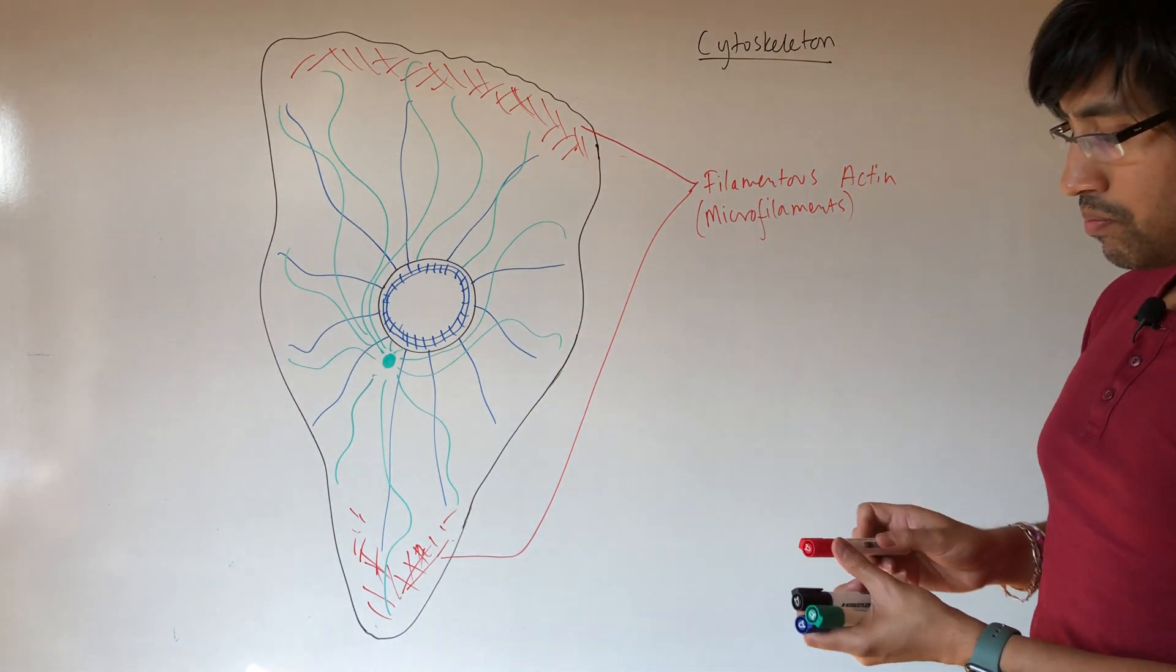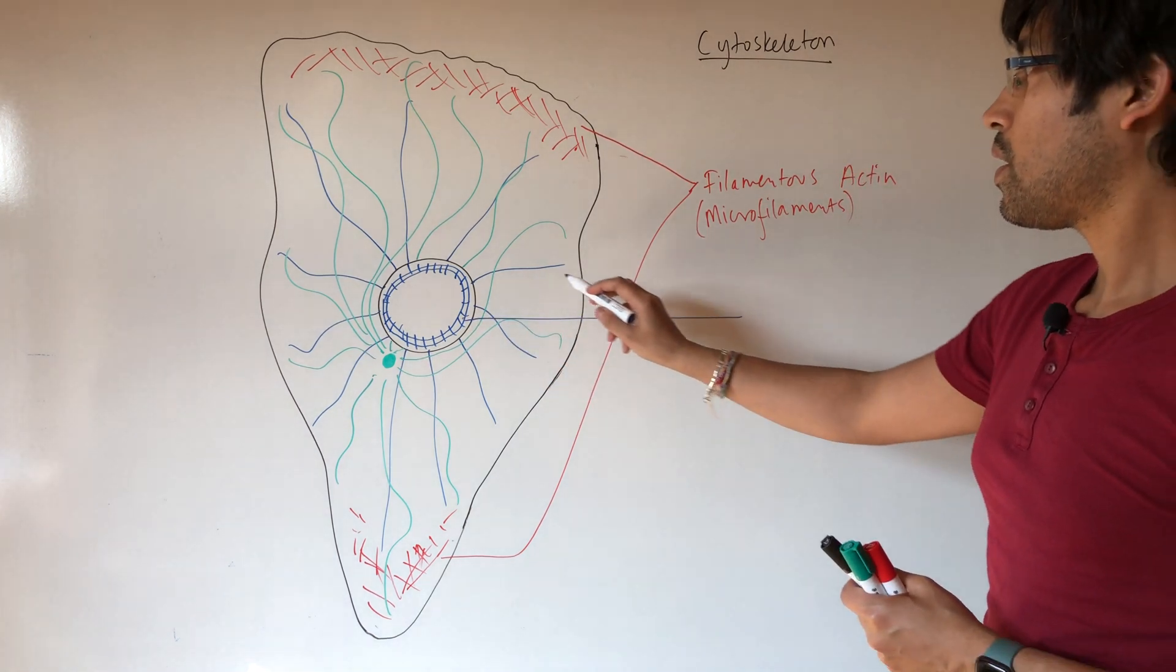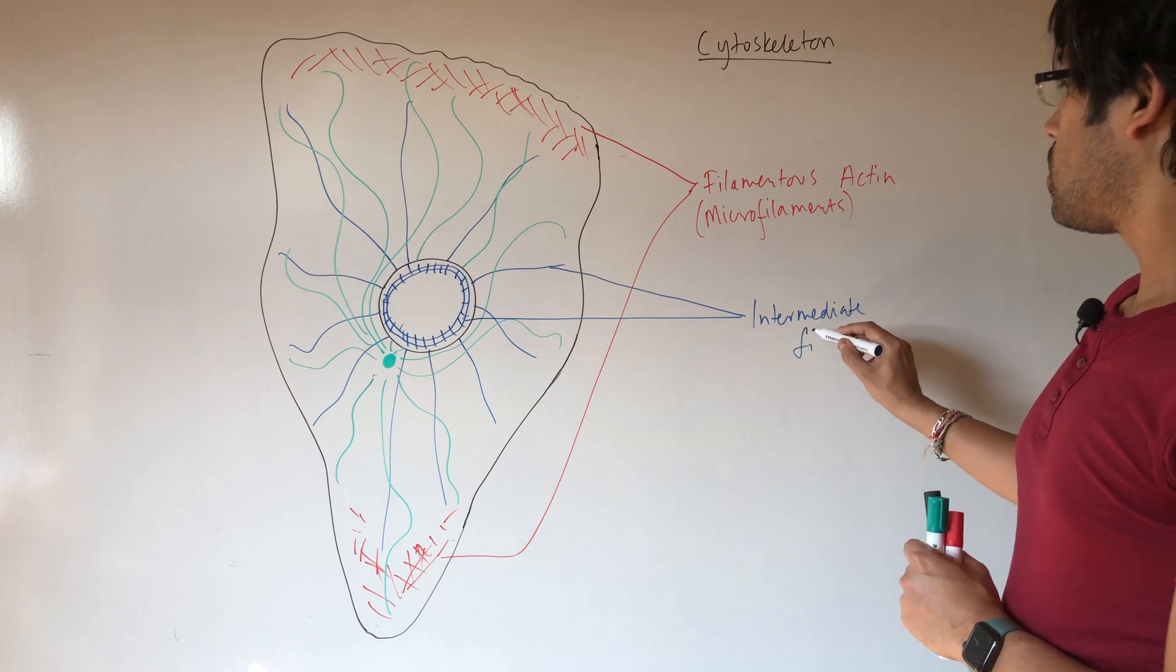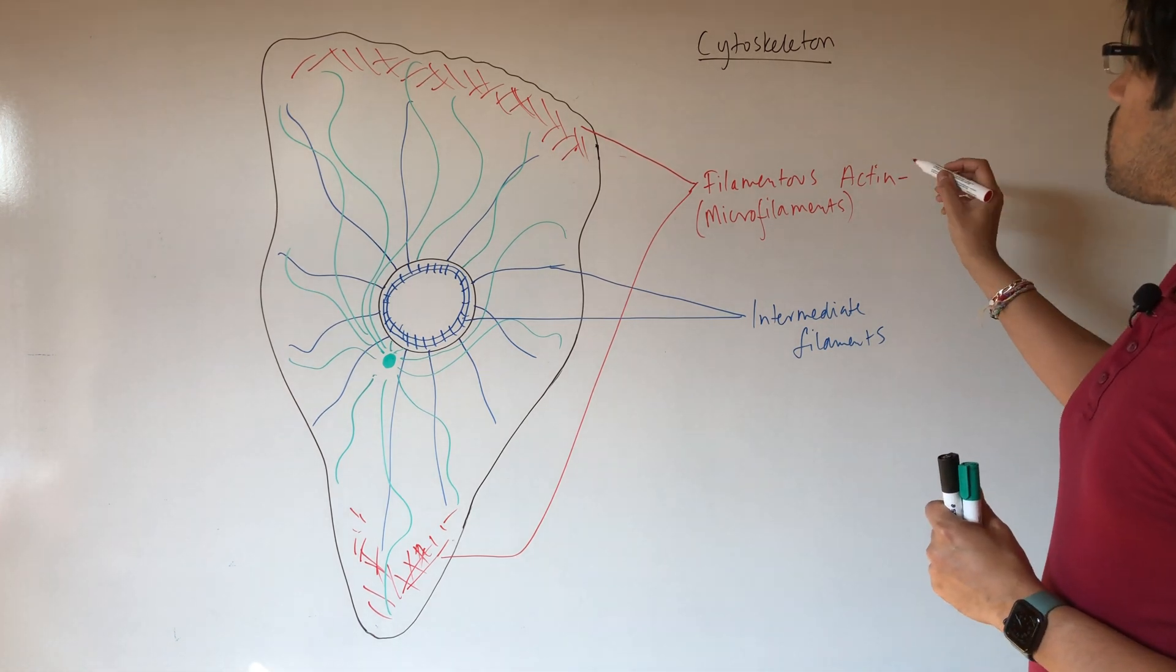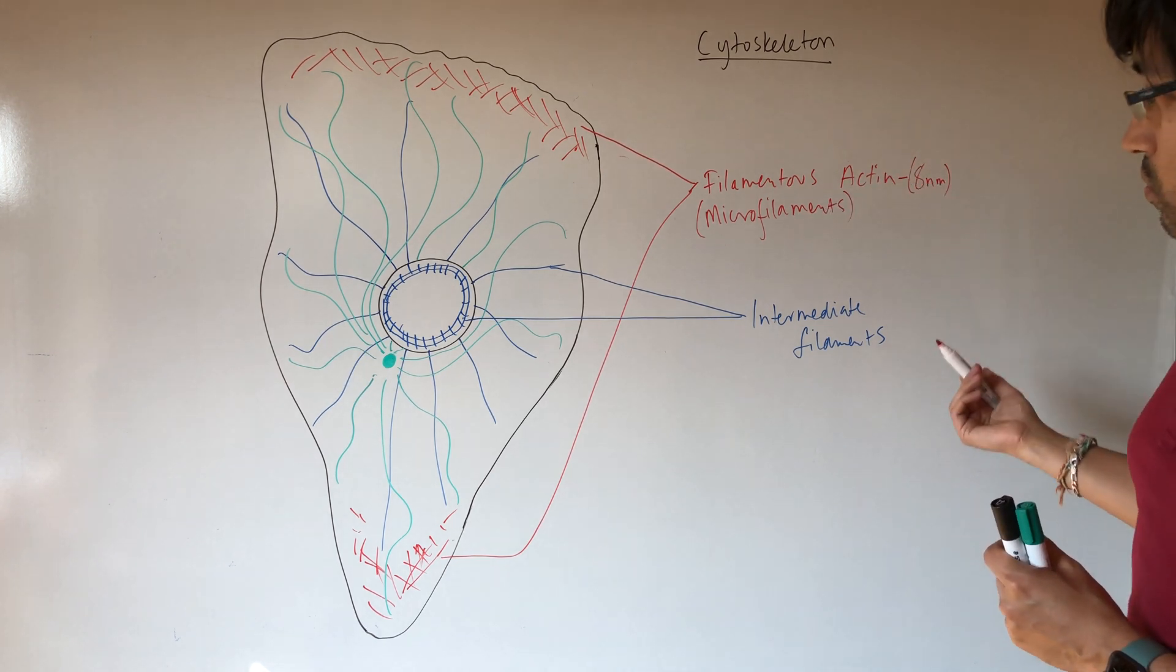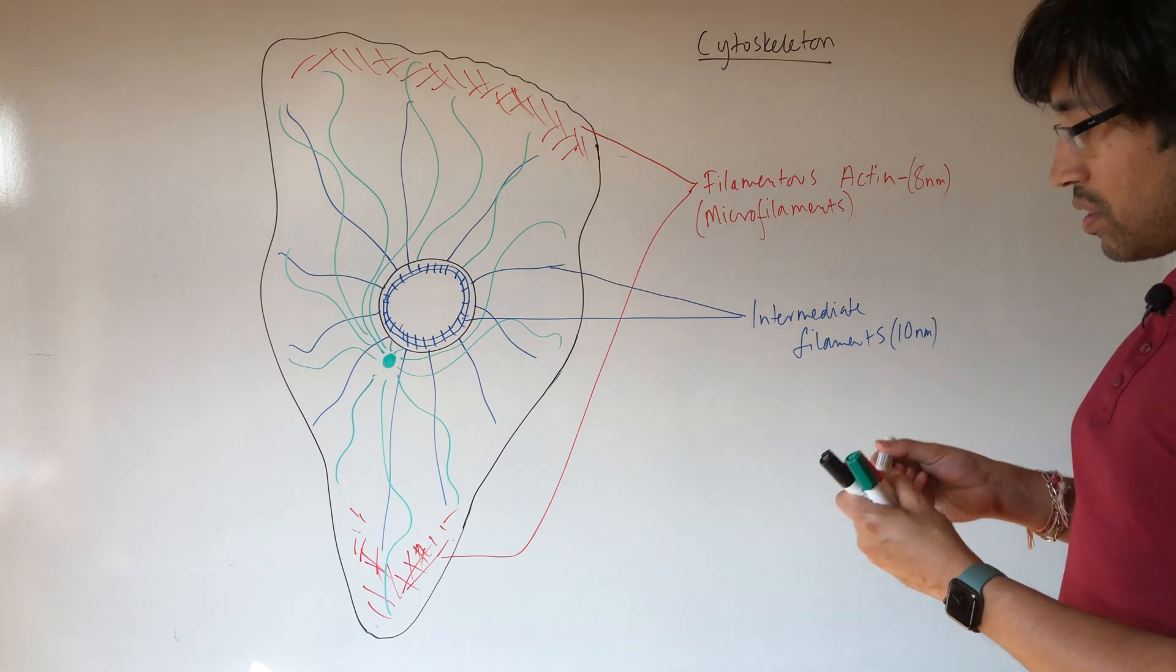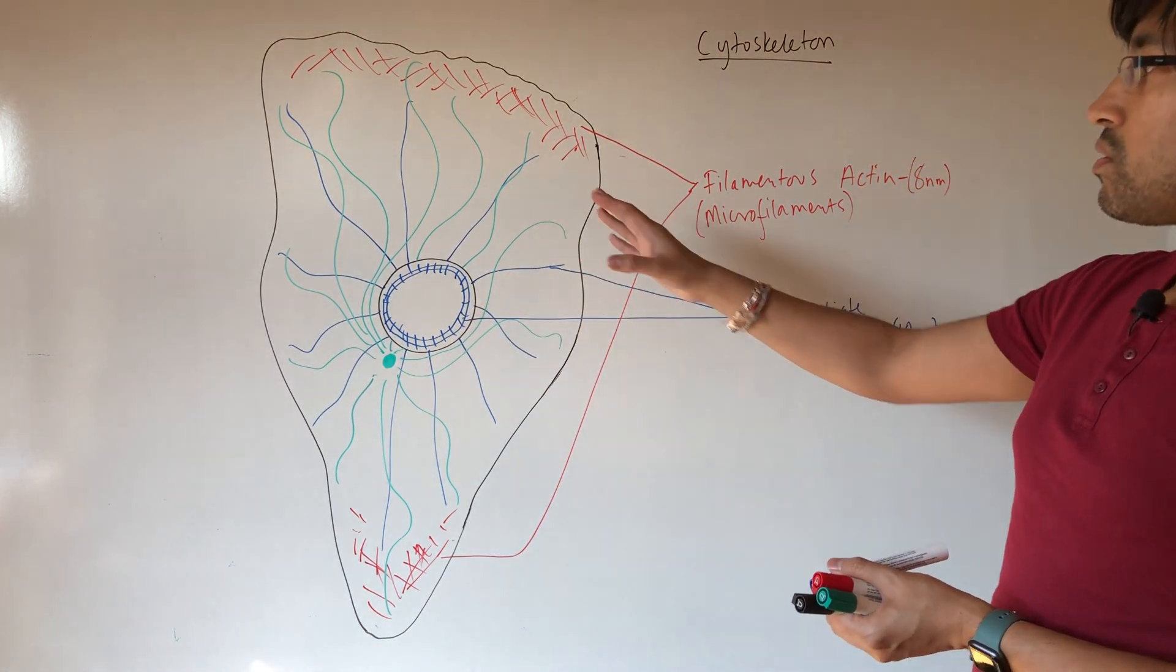Next, we have in blue, in blue, we have so partly in the nucleus and also in the cytoplasm, we have the intermediate filaments. So let's just roughly look at the size of these things. So the filamentous actin filaments are roughly eight nanometers in width. So they're the smallest in width of all the filaments. The intermediate filaments are about 10 nanometers in width. Now, the intermediate filaments are, yeah, there's a little bit in the nucleus and in the cytoplasm.